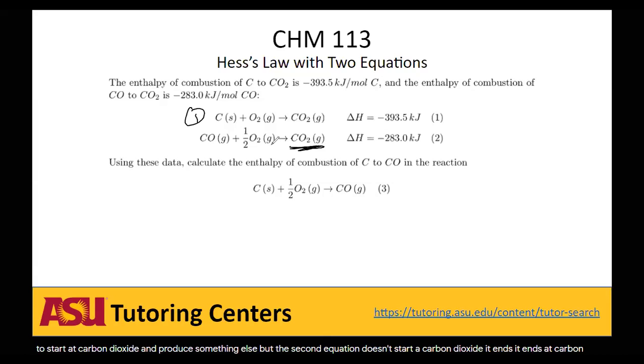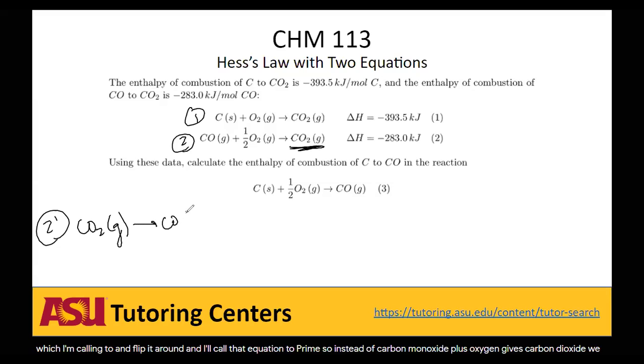And we're allowed to do that, actually. So we can actually take this second equation, which I'm calling 2, and flip it around. And I'll call that equation 2 prime. So instead of carbon monoxide plus oxygen gives carbon dioxide, we can instead have carbon dioxide gives carbon monoxide and oxygen. And in doing so, the enthalpy will actually swap.